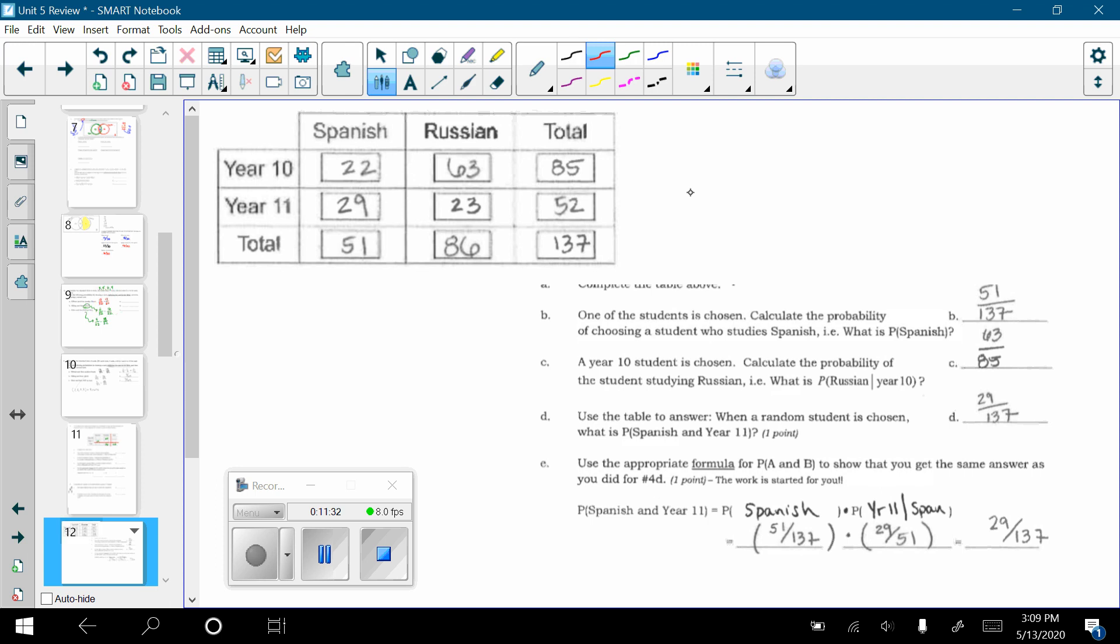Okay? And then once you have this chart, it says one of the students is chosen. So, the probability of choosing a student who studies Spanish. In other words, what is the probability of Spanish? That is 51 out of 137. Then they said a year 10 student is chosen. If you know you are picking someone from year 10, then you are only looking at the part of the table that I just highlighted. And they said within year 10, what is the probability of speaking Russian? So, what is the probability of Russian given that you are in year 10? So, Russian out of the total for year 10 is my answer.